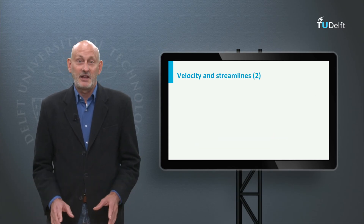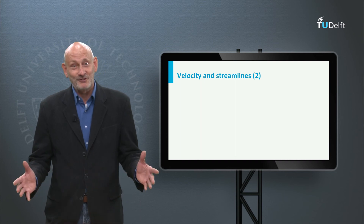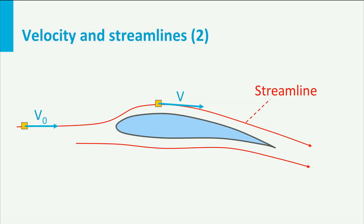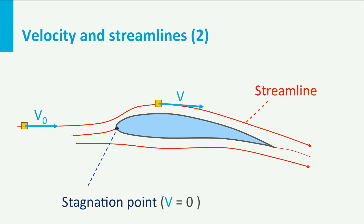If we look at the flow over an airfoil, we can visualize the streamlines with smoke for instance. We see streamlines passing over the airfoil upper surface, and streamlines moving along the lower surface. There is one streamline, the dividing streamline, that ends on the airfoil leading edge. This point is called the stagnation point, and the associated pressure is called the stagnation pressure or the total pressure.